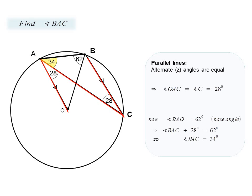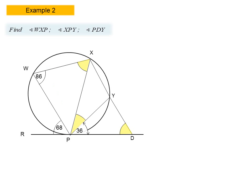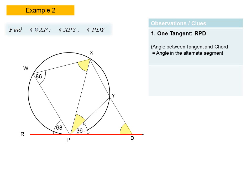Here we have example number two. We're again asked to find angles shown in yellow. As we said in lesson one, we expect that each circle problem should take you no more than five minutes to solve, once you adopt an approach where you start by observing, look for clues, and then allow those clues to point you in a particular direction.